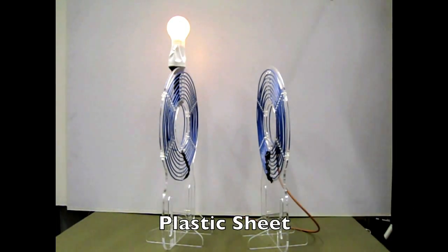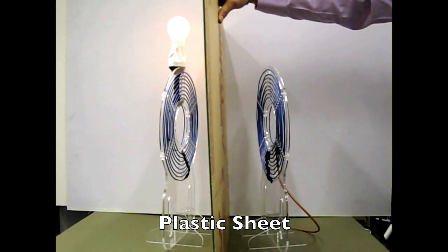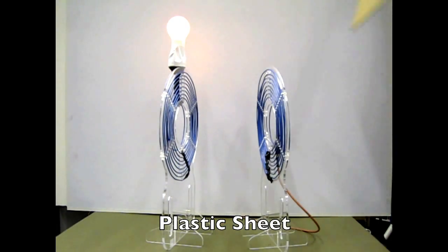First we introduce a plastic sheet to the medium between the transmitter and the receiver. You can see that the magnetic fields permeate through the sheet and wirelessly power the light bulb.